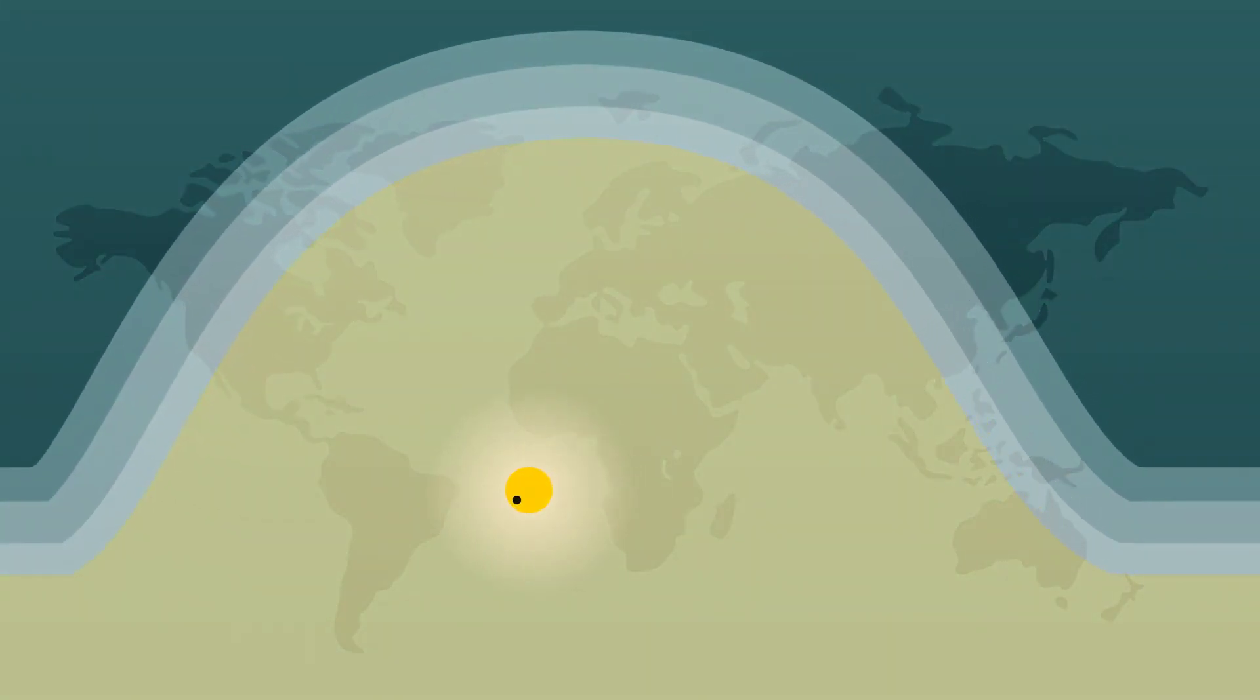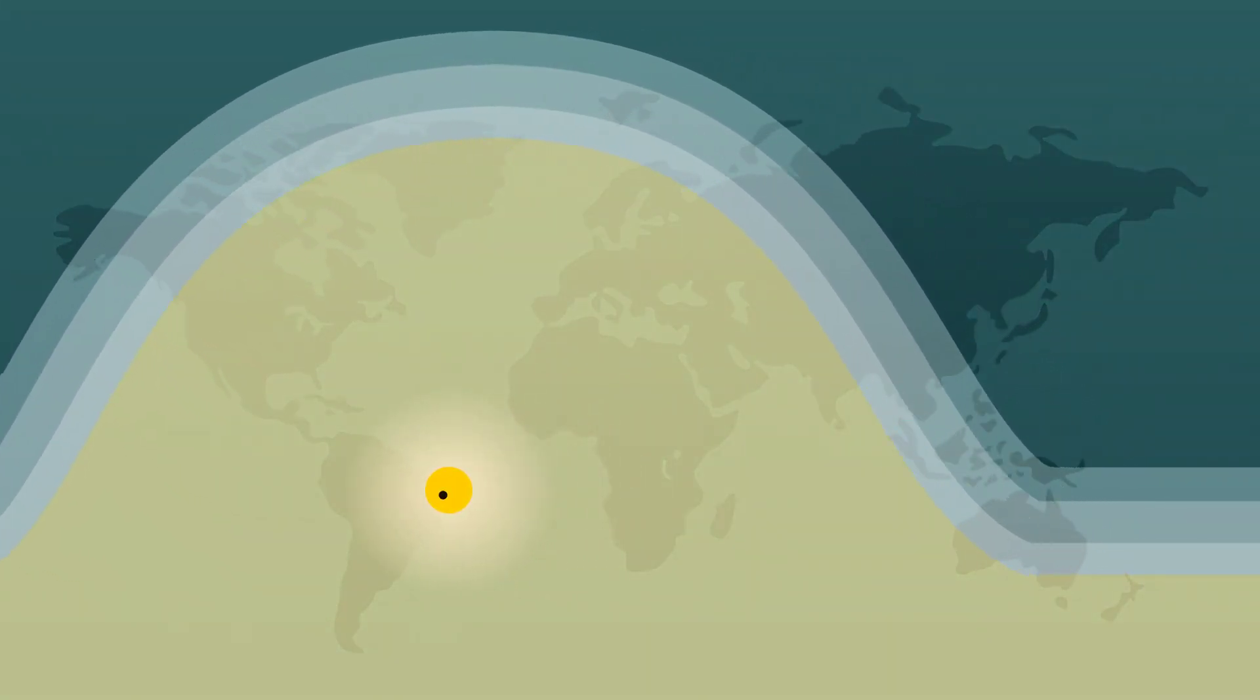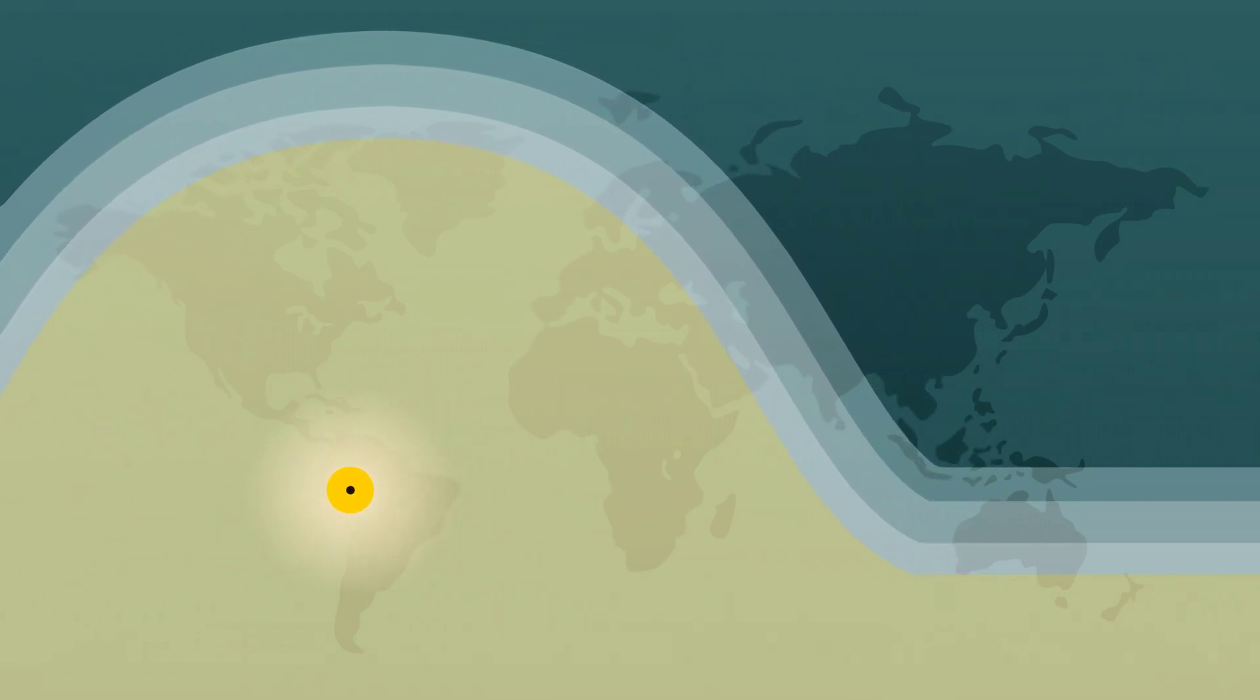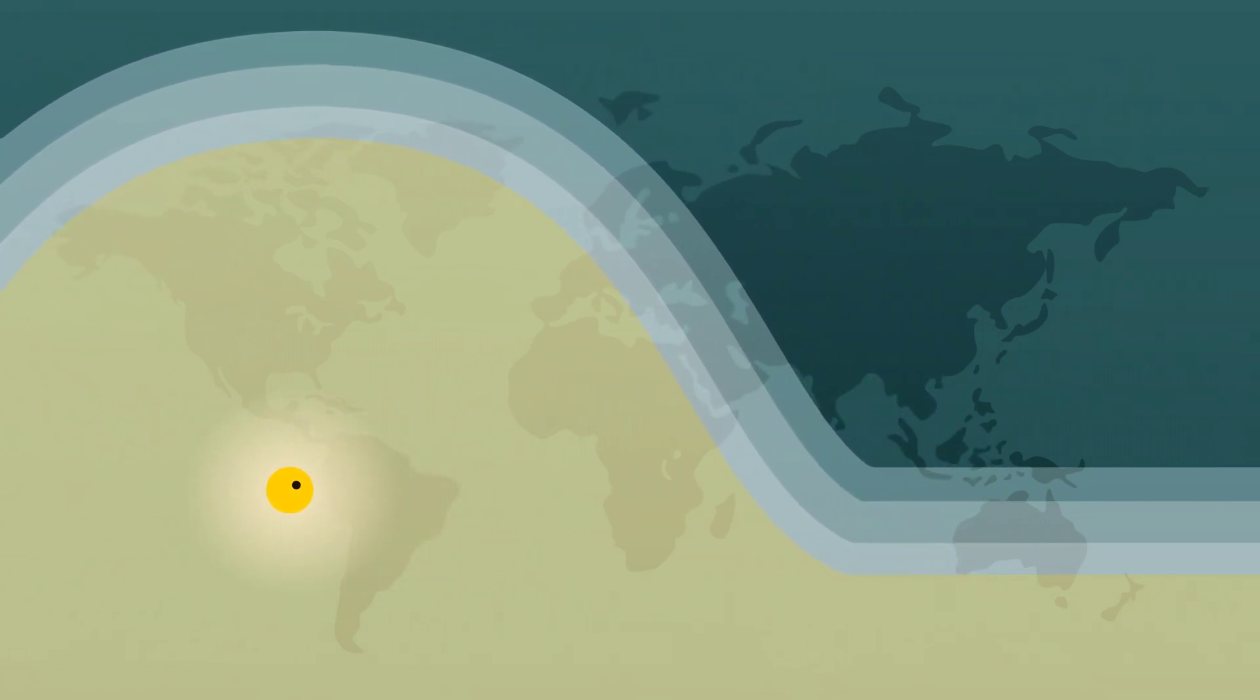Depending on where you live, you can watch some or all of Mercury's transit. It takes about five and a half hours. He'll look like a tiny black dot flying past me.